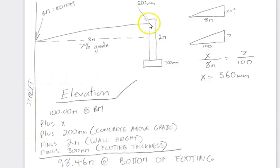We're going to add now what we're allowing to have for concrete above grade, or what we're shooting for. That's 200 millimeters, or 0.2 meters. Once we've added those two, we have our elevation at the top of the wall, and it's just a simple subtraction of the wall height and the footing thickness to get our elevation.